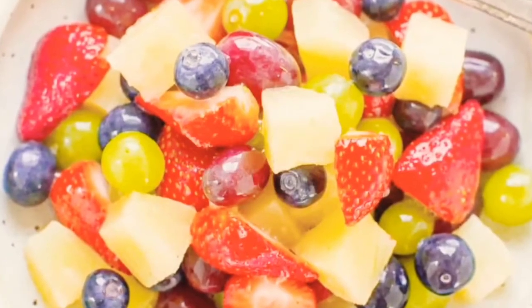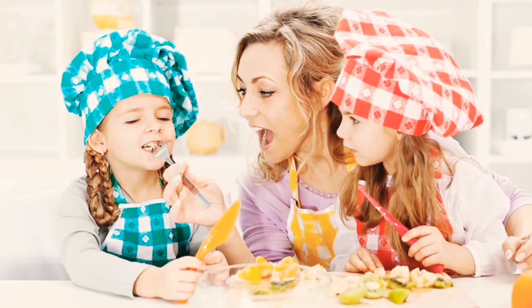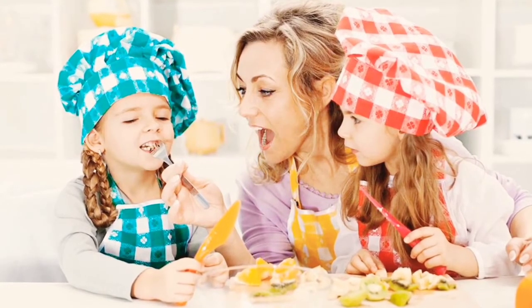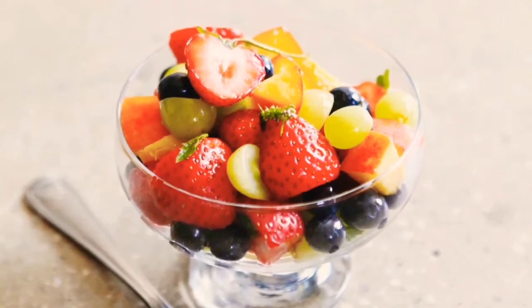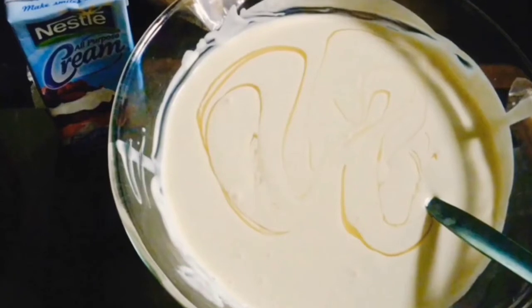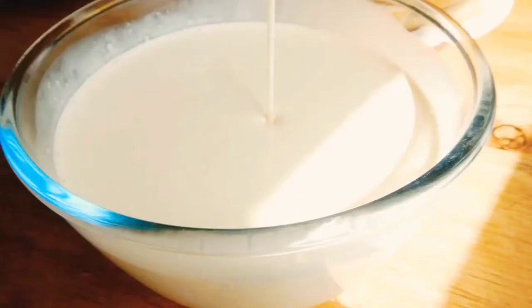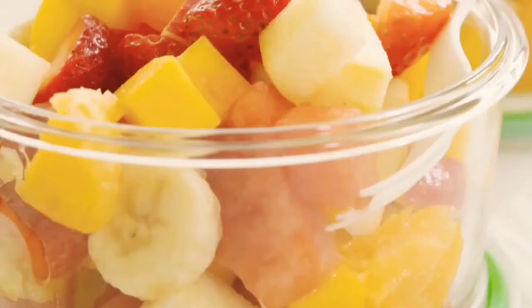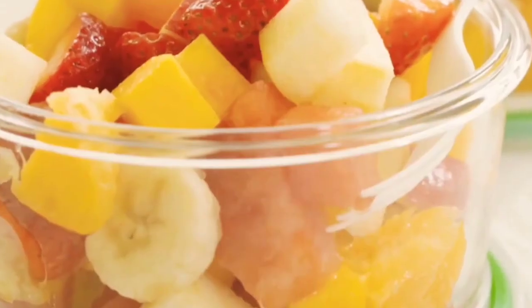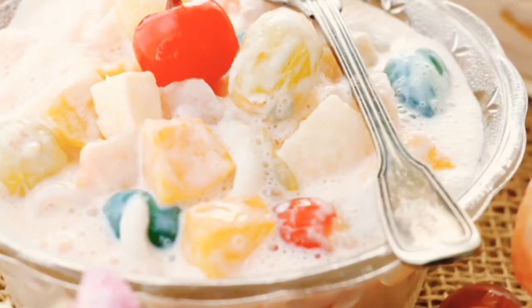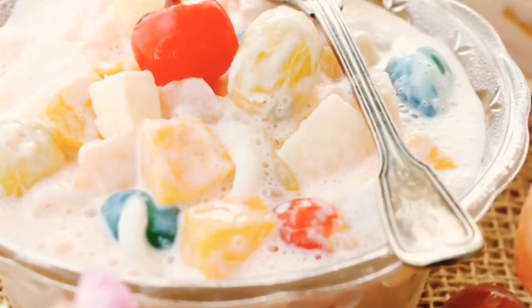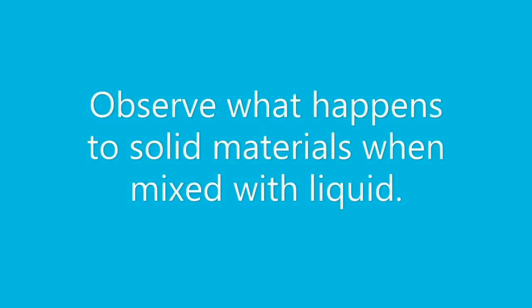You love eating fruit salad, right? But have you seen your parents prepare it? All the solid ingredients, which are mostly fruits of course, and the liquid ingredients of condensed milk and cream are mixed together. The resulting fruit salad, which you enjoy eating, is a mixture which is formed when two or more materials are combined together. Now, observe what happens to solid materials when mixed with liquid materials.